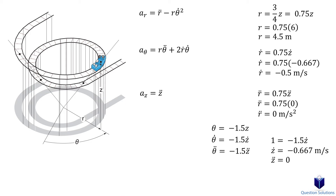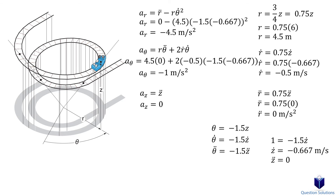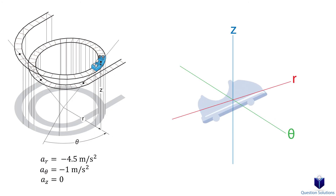Now we can find the three accelerations. We will start with the radial acceleration — remember to plug in the z velocity as well. Now for the transverse acceleration. Lastly, the acceleration in the z direction is zero. Let's draw our free body diagram. We have the force in the radial direction, the force in the transverse direction, the force in the z direction, and we have the weight.